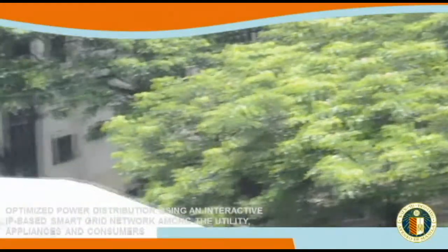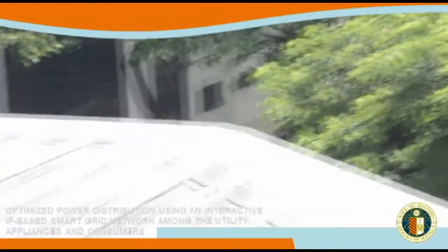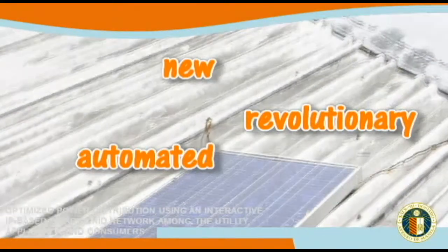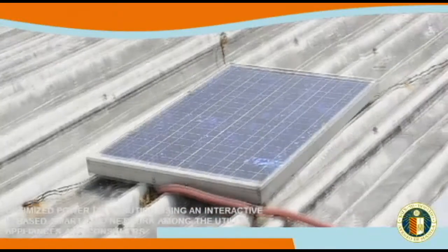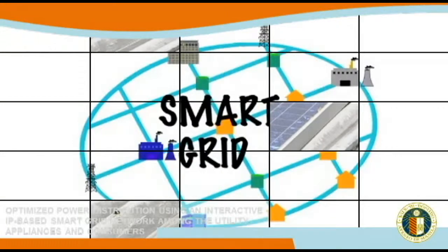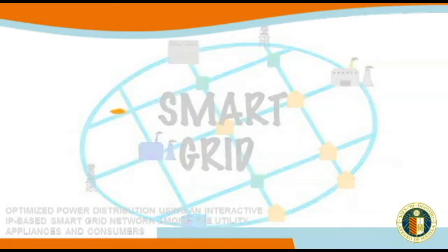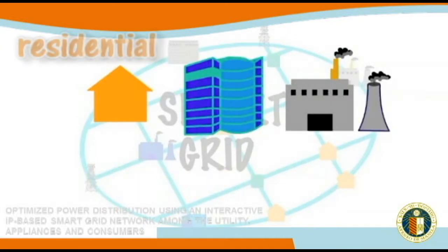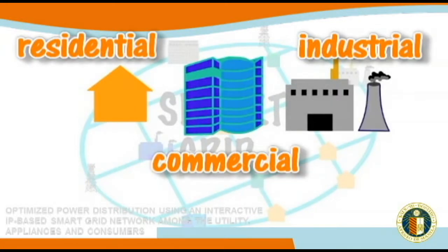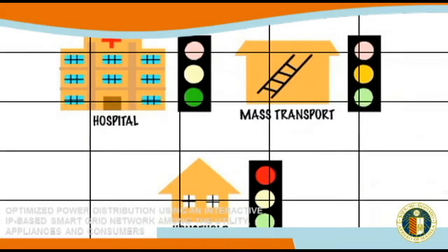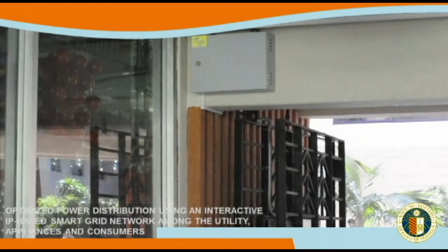The current deployment of electric utility grids in the Philippines can be built upon to provide new, revolutionary, and automated services in terms of power distribution and generation. This idea opens the notion of adopting a smart management system, which operationally provides prioritization parameters dependent on a set of relevant protocols and considerations, which may include — but are not limited to — geographical location, economic function of the consumers, and even calamity-induced necessities.